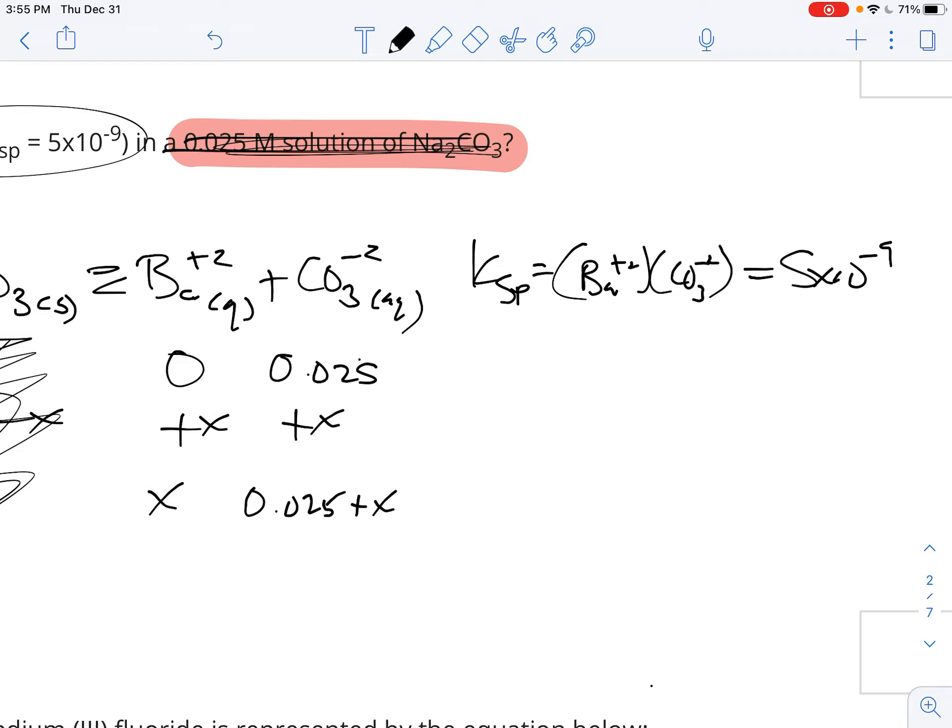The cheap and easy way for this is to recognize that this number here, the negative ninth, is so small compared to this number here, 0.025, that this X is going to be completely irrelevant. So what we now have is X and 0.025 that are going to go up there.